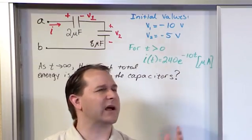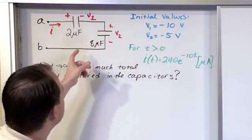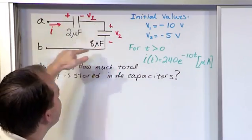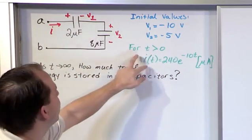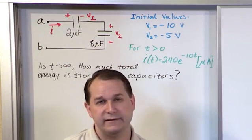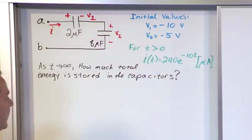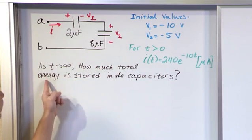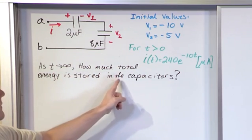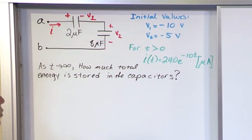Alright, so we're given lots of information. We're given the circuit, we're given the values, we're given the orientation of the voltages and the currents, we're told the initial values of the voltages and the currents, and we're told what this current basically is as T goes on to infinity. The question is, as T goes to infinity, how much total energy is stored in the capacitors?